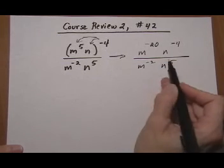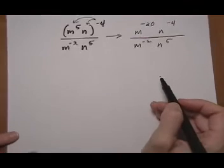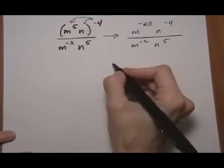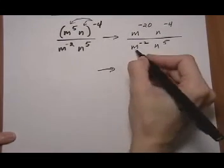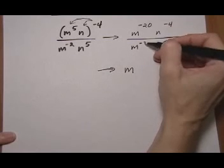And now we have like bases being divided. So we can go right to the quotient rule. So the quotient rule will tell us, keep the base, subtract the top, take away the bottom exponent.